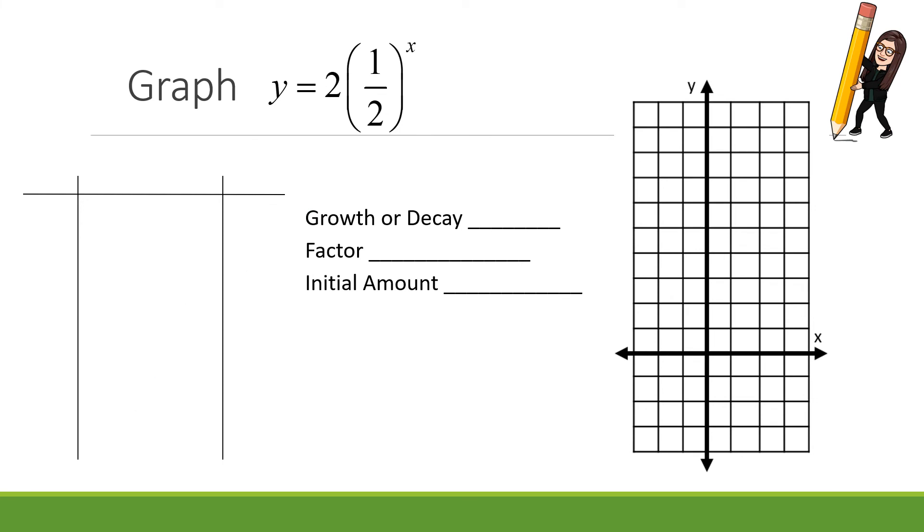Let's take a look at another one here. Let's start off with our b value. Our base, our factor is 1 half, which means that we have a decay function because 1 half is between 0 and 1. Our initial amount is 2. So let's take care of that right away. Let's plot that. If my initial value is 2, my a value is 2, that is my y-intercept. When I plug in 0, I'm going to get 2. I'm okay if you don't show work on that one. But what I do want to see work on is for the other four values.